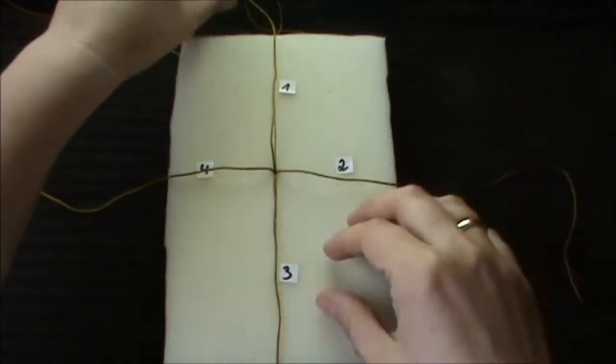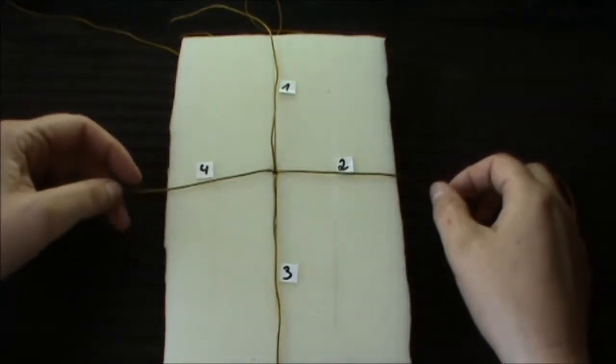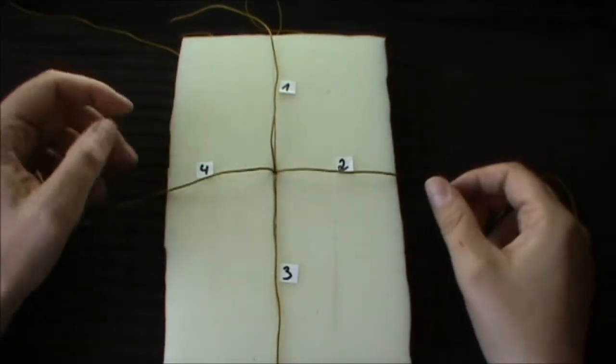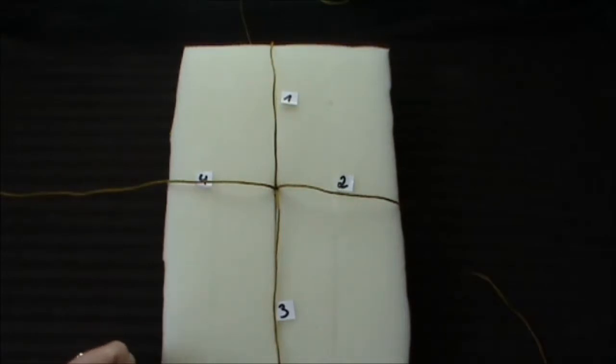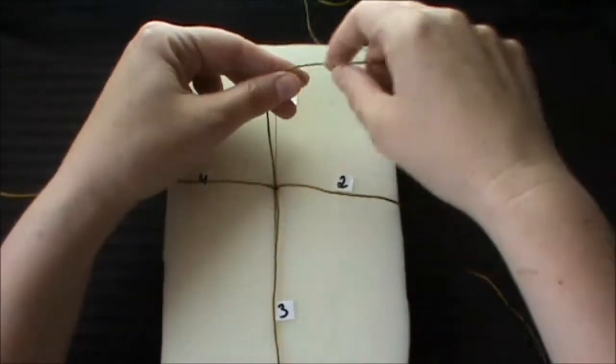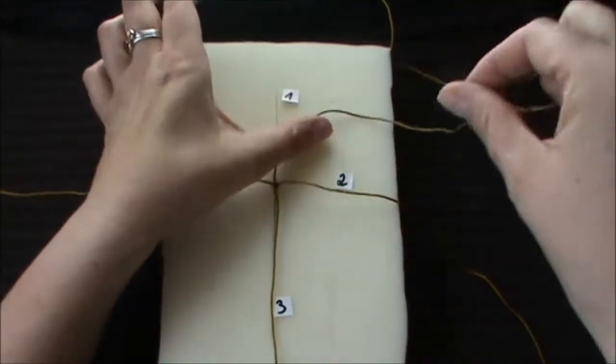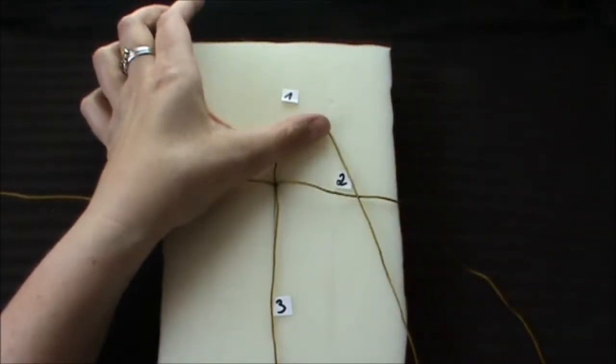And now we have the four strings we need to knot the bracelet. Now we want to make the first knot. For this you take the first string and put it over the string number two.